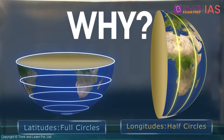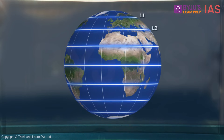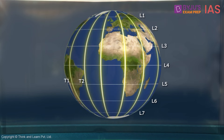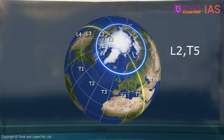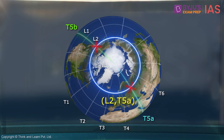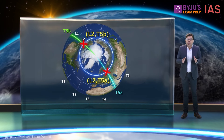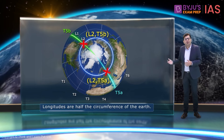Let's understand this by an example. If we assume the longitudes are full circles and call latitudes L1, L2 and longitudes T1, T2 and so on, then if asked to locate a point with coordinates L2, T5, we find that L2 and T5 intersect at two points. A unique set of coordinates would end up pointing at two locations, making the coordinates not unique at all. To solve this, we divide the longitudes into half circles — T5A and T5B — so we can locate two points separately as L2, T5A and L2, T5B. That's why longitudes are not full circles. The length of all the longitudes is the same, about half the circumference of the whole Earth.